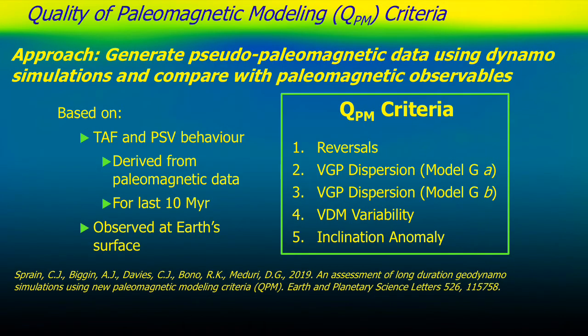Our attempt to answer that question was developing the QPM — Quality of Paleomagnetic Modeling — criteria. The philosophy is that instead of bringing paleomagnetic observations to the dynamo space, we generate pseudo-paleomagnetic data using a dynamo simulation and compare that with our paleomagnetic observations. We came up with criteria to reflect the time-averaged field and paleosecular variation, focusing for now on the last 10 million years where we think we have enough data. Unlike the Christensen criteria, this is done at Earth's surface where the field is recorded in rocks.